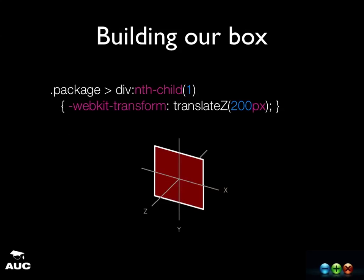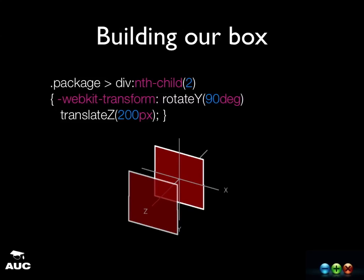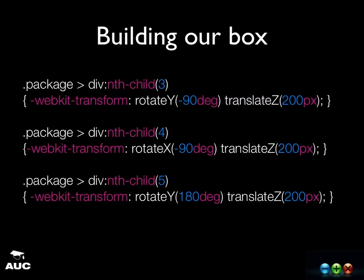We're using the nth-child selector in CSS, which lets you pick out a particular div that's a child of another DOM element. What we're going to do is translate that on the Z axis, which means it will move towards the screen — towards the user. For the second child div, we first rotate it and then translate it. For each of those 5 divs we're doing some sort of rotation and a translate, which means we can build up a 3-dimensional cube.